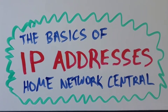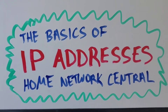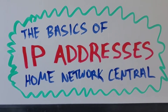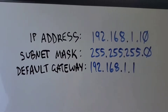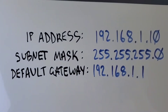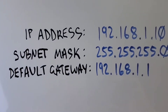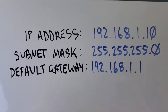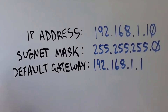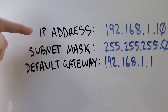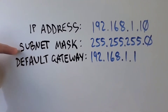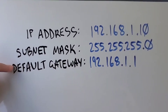I'm Eric with Home Network Central, and this will be about the basics of IP addresses. If you look at the network settings of any of your devices on your network, you'll probably notice there are three different things that look like three separate IPs in the settings. You'll have your IP address, you have the subnet mask, and you have the default gateway.